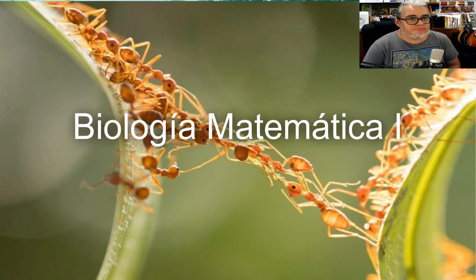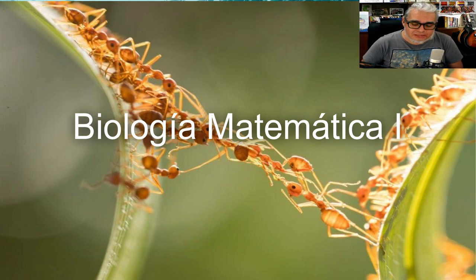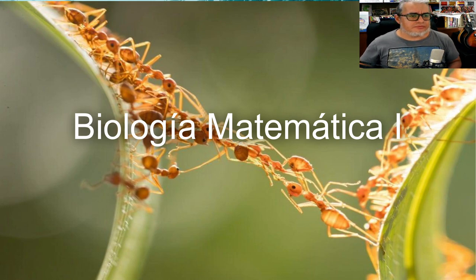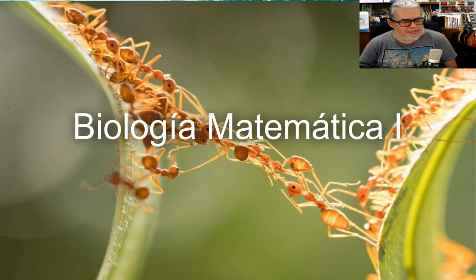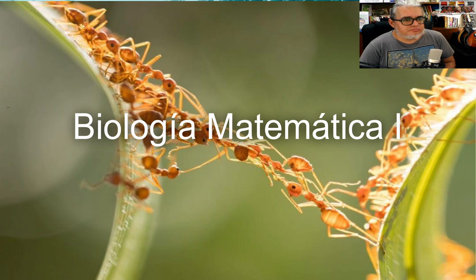El curso Biología Matemática 1 es un curso optativo para los semestres 7 y 8. Se puede tomar durante el segundo bloque de materias optativas porque lo que estamos pidiendo es únicamente que hayan cursado álgebra lineal y cálculo 3. Álgebra lineal y cálculo 3 es suficiente para llevar este curso. Si están cursando ecuaciones diferenciales también es suficiente para lo que vamos a estar haciendo.